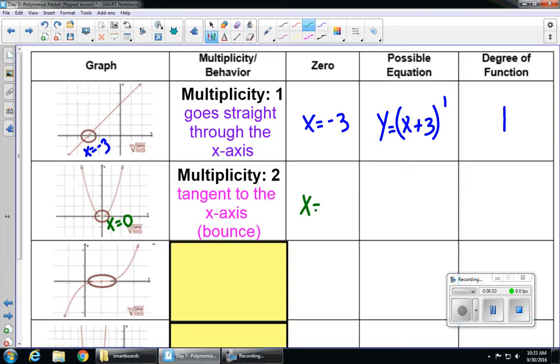Our zero is x equals 0. Our possible equation would be y equals (x minus 0) squared. But we know we really don't need that minus 0, so you could write it as x squared. But I want you to start seeing this pattern. That's why I have it in parentheses with the squared on the outside. And this would be a degree 2 function, or second degree function.